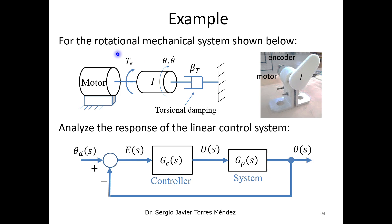As an example, suppose we have a rotational mechanical system that can also represent a robotic system with one link. We have an electrical motor coupled with a shaft with an inertial mass, and we model the frictional forces using torsional damping with a torsional damping factor called beta_t. We want this shaft to move to a specific position, velocity, and acceleration according to the control signal — the torque from the electrical motor.